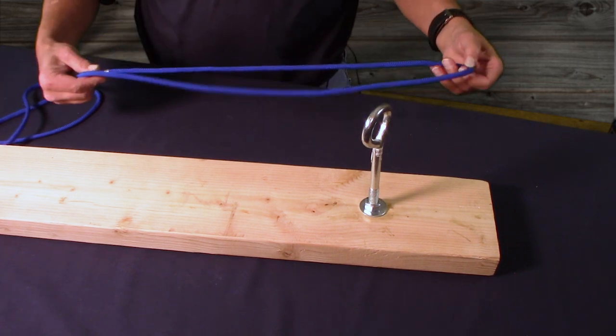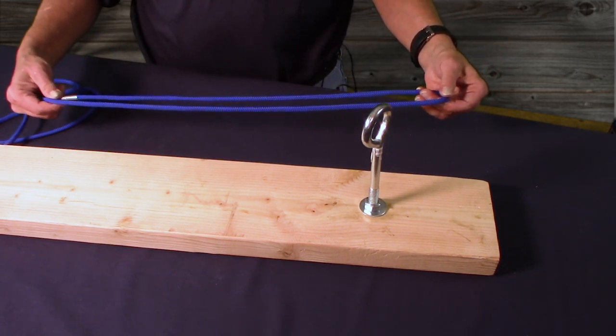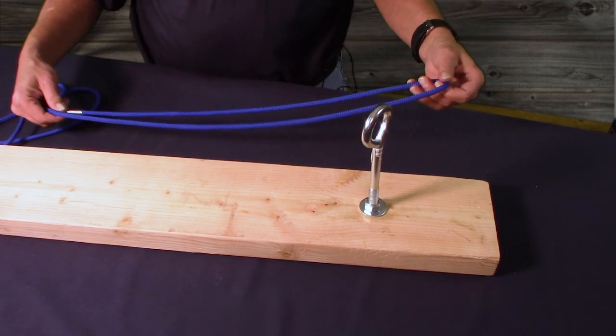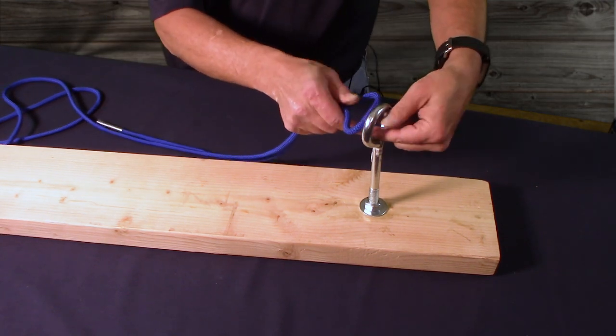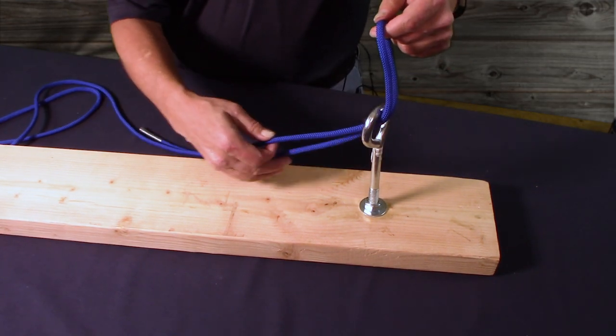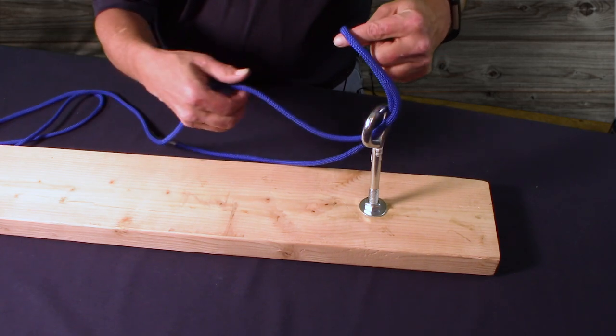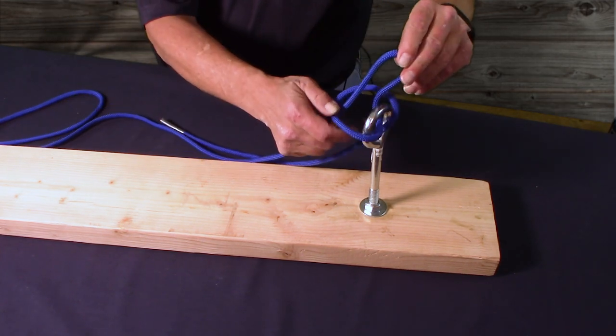We're going to take a loop, we're going to loop our working end back on itself. Give yourself enough room to work, but we're going to go around whatever we're tying to. We're going to take our standing end and pull a loop through that loop.